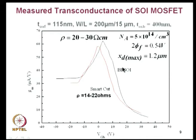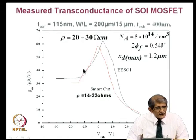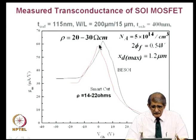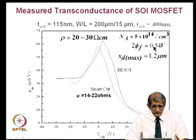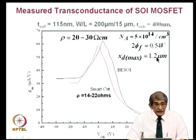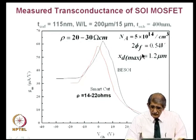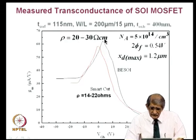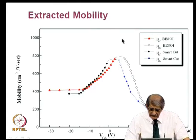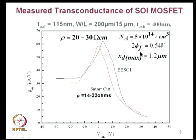This is one result reported by some of our students. The SOI MOSFET had doping of 5×10^14 per cm³, 2φ_F is 0.54 V, and x_tmax is 1.2 micrometers, but T_silicon is much smaller — about 87 nanometers. Front gate oxide is 115 nanometers, back gate oxide is 400 nanometers. So it is a fully depleted layer.